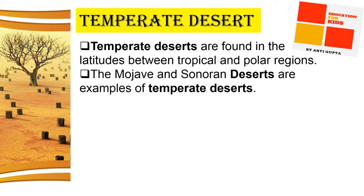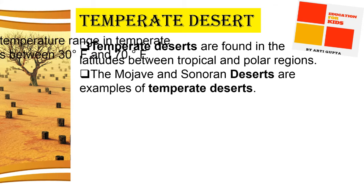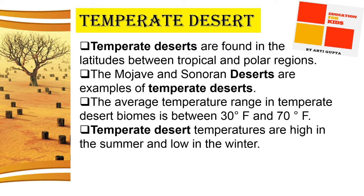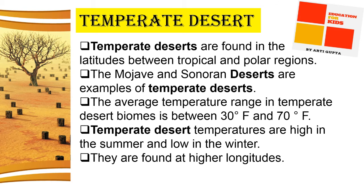Temperate deserts are found in latitudes between tropical and polar regions. The Mojave and Sonoran deserts are examples of temperate deserts. The average temperature range in temperate desert biomes is between 30 degrees Fahrenheit and 70 degrees Fahrenheit. Temperatures are high in summer and low in winter. They are found at higher longitudes.